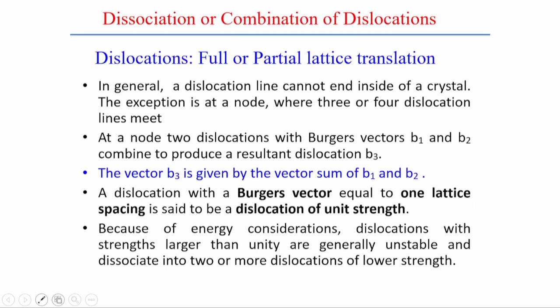A dislocation line cannot end inside the crystal. In practice, when we analyze dislocation movement, we consider one segment that starts from one node to another node—the meeting point of several dislocations. At a node, two dislocations with Burgers vectors b1 and b2 can combine to produce a resultant dislocation with Burgers vector b3.